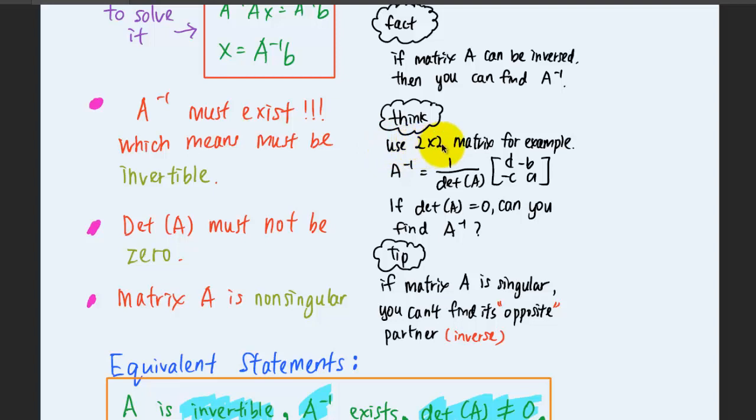We'll use the case for 2 by 2 matrix, for example. To get the inverse of a 2 by 2 matrix, you divide 1 over the determinant of A. If the determinant of A is equal to zero, can you find the inverse? Definitely, you can't find the inverse. So the determinant of A must not be zero for any case of system of linear equations in order for it to have a solution.